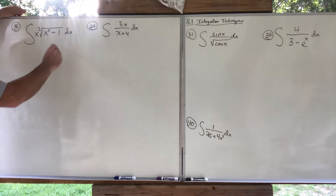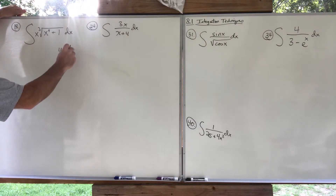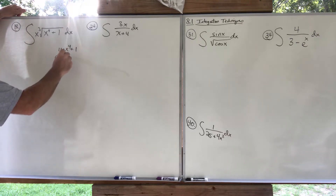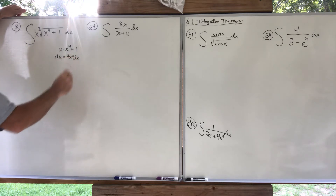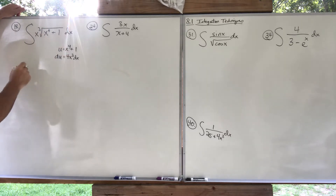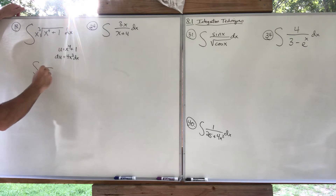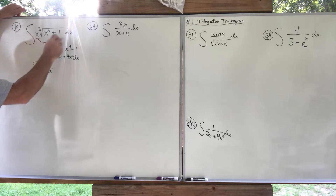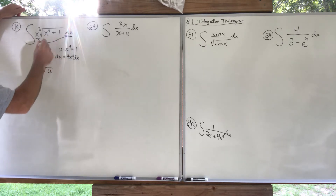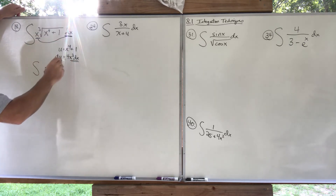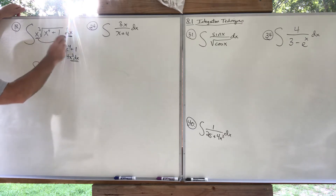I'm going to let u equal what's in the radical: x⁴ + 1. Then du is the derivative, which is 4x³ dx. You should be happy because this fits the pattern very well. When we replace: that square root becomes √u, and that x³ dx — rearranging, moving the 4 over — becomes (1/4) du.